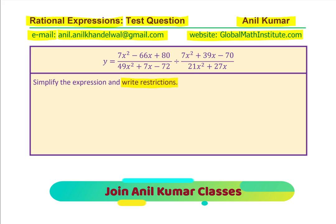Now let us look into the solution. What you really need to do is factor each term. It is better to factor them separately. In this example, you have trinomials which are not easy to factor. We have 7x squared minus 66x plus 80. How will you factor this? We need the product of two numbers whose product should be 7 times 80. And their sum, p plus q, should be equal to minus 66.